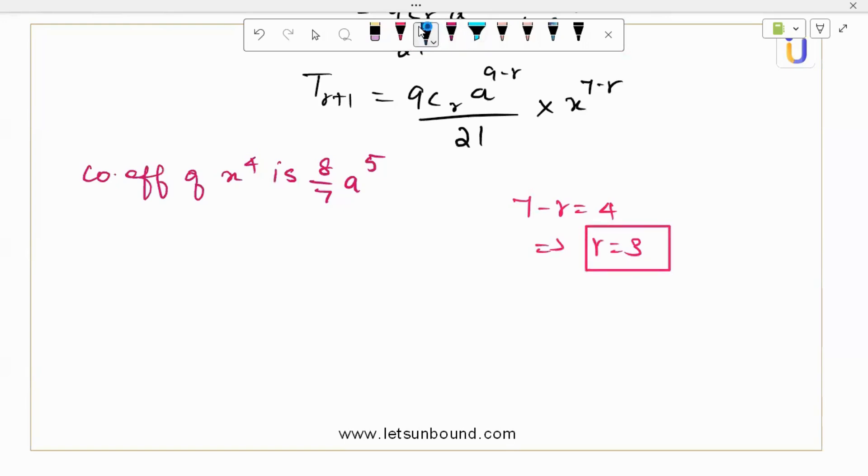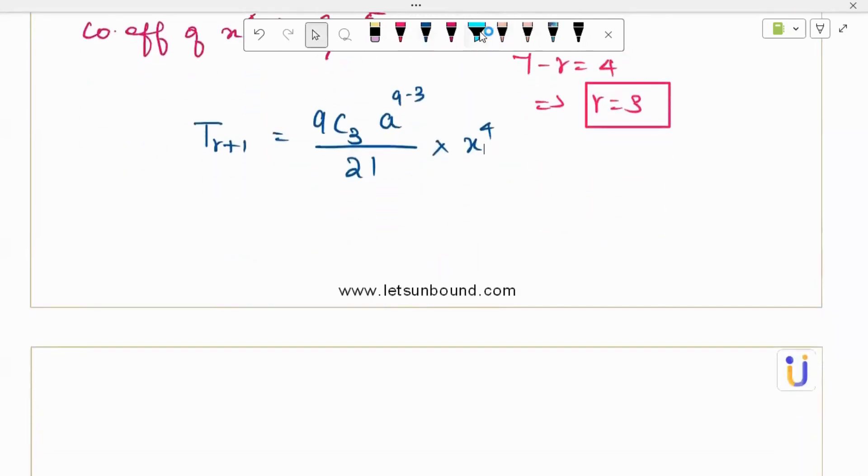So your fourth term is T_r+1 equal to 9C3 a power 9 minus 3 divided by 21 times x power 4. Right? This is the coefficient of x power 4 and they already give in a simplified form. So the given thing and what I find just now, both are same.